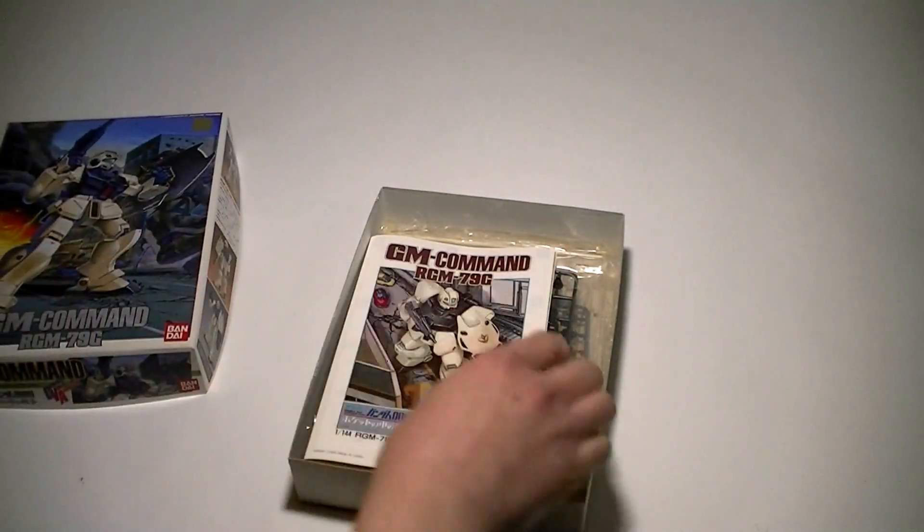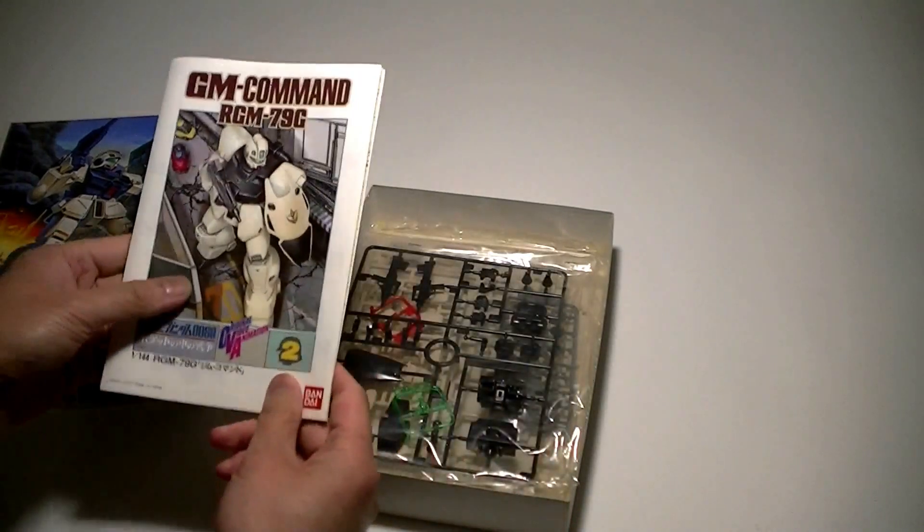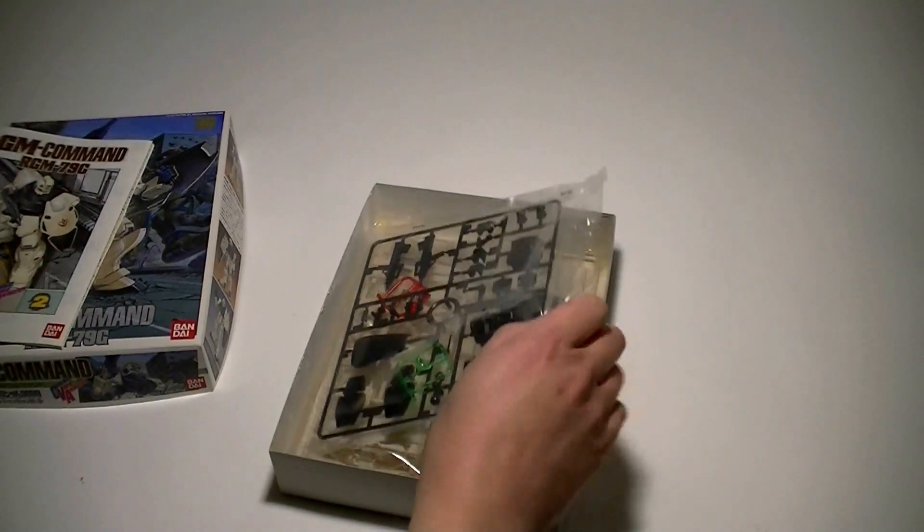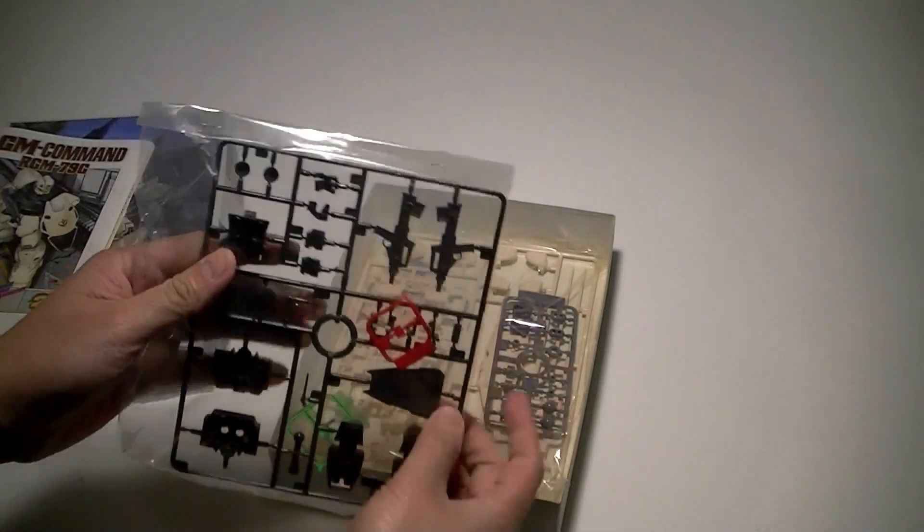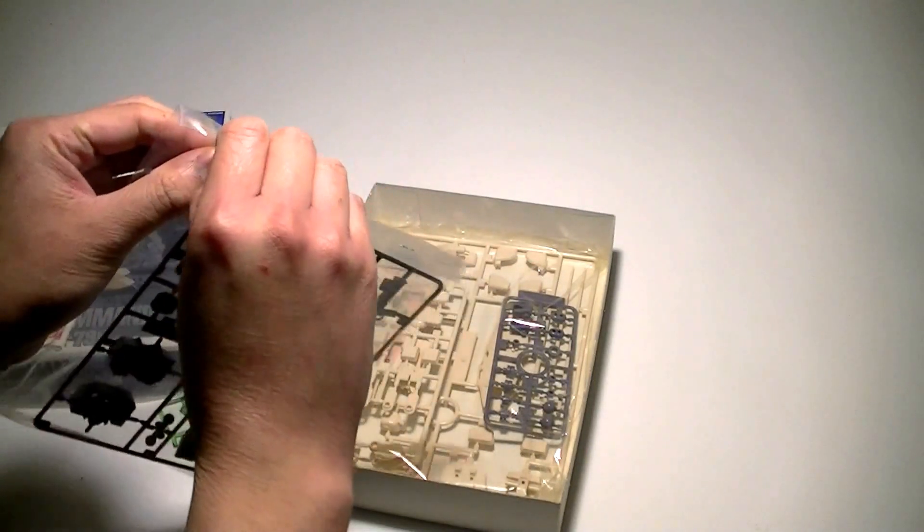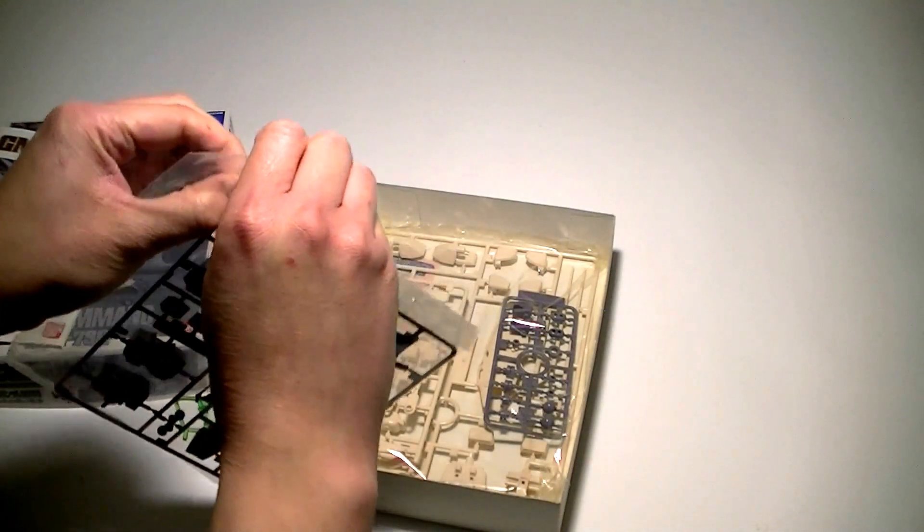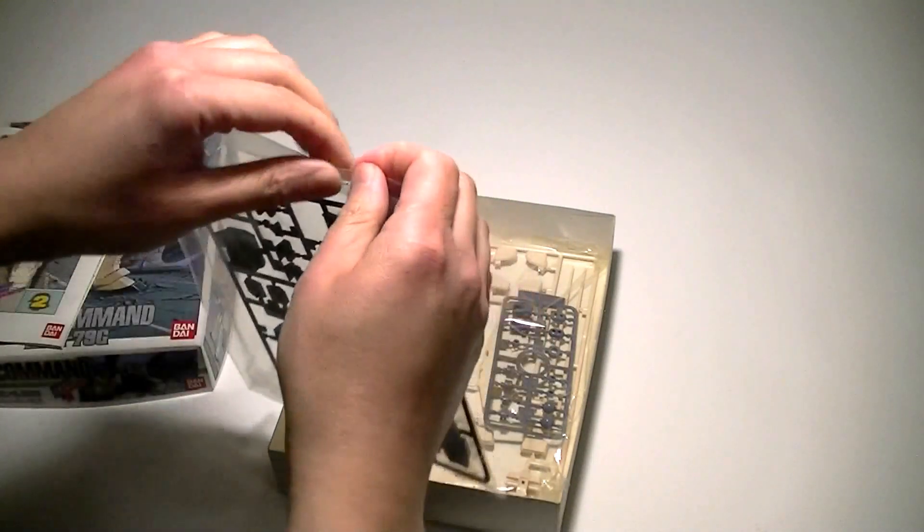We've got the instructions with alternate cover art. We'll go through that in a minute. And then we've got the sprues. Here's the first set of sprues. You know this is old when you see staples on the bag itself. I don't know if Bandai still does that with re-issues of this kit.